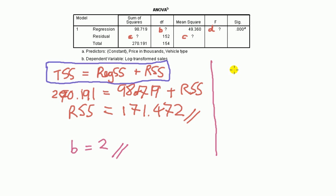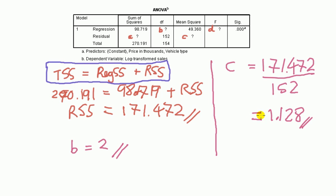So, to get C, we're going to divide figure A, which we found to be 171.472, divide that by its degree of freedom, 152. Okay, and that comes out to be about 1.128.